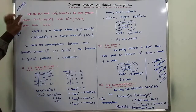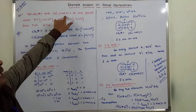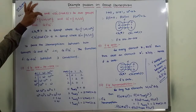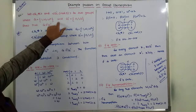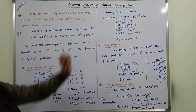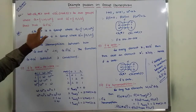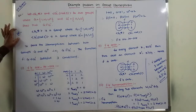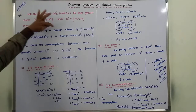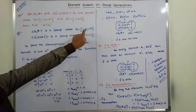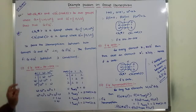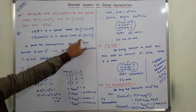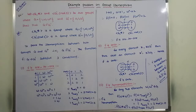Let G with star operation and G' with mod 3 be two groups, where G is defined as the set {1, ω, ω²} and G' is equal to the set {0, 1, 2}. Show that G is isomorphic to G'.